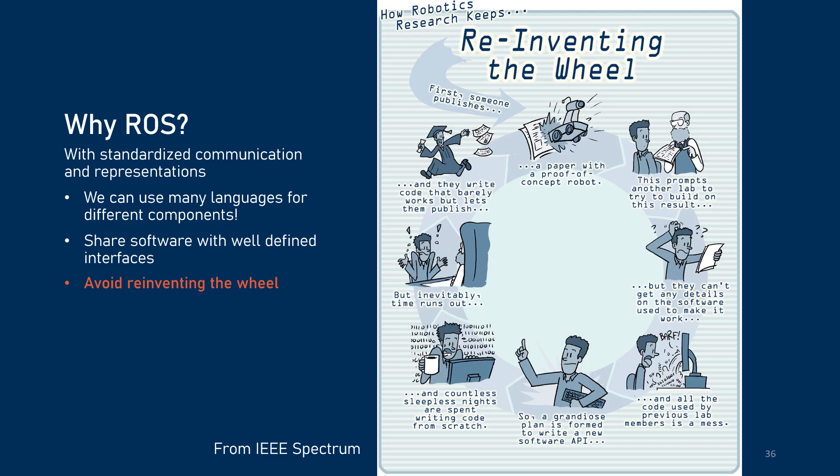The big idea of ROS is that with this standard framework, people can collaborate and create modules and share them with each other, and those modules can talk to each other because you've got this standard communication method. ROS is a large and complex framework and can be daunting to learn, but it is such a powerful tool that it is worth learning — and definitely easier than having to reinvent all of the infrastructure yourself.